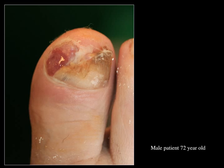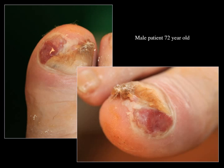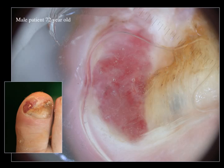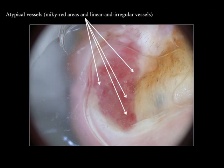Case number four: a 70-year-old male patient with a painful big toenail. The lesion has been evolving for at least three years and he already received three lines of antifungal treatment. It is an amelanotic unpigmented lesion — erosive, with changes to the nail plate and some bleeding. Here is the dermoscopy. Atypical vessels are observed as milky red areas or linear irregular vessels with very variable diameter.